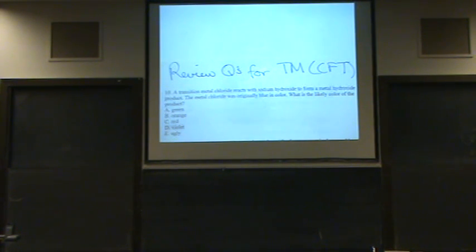Transition metal chloride reacts with sodium hydroxide to make a metal hydroxide. So what happens? There were chlorine ligands and now there are hydroxide ligands. The metal chloride was originally blue in color. What is the most likely color of the product?